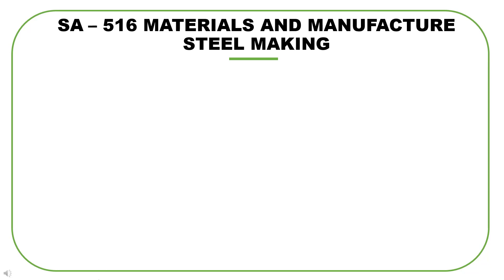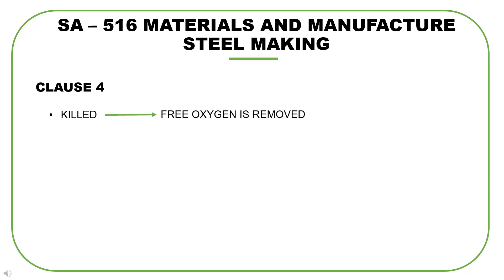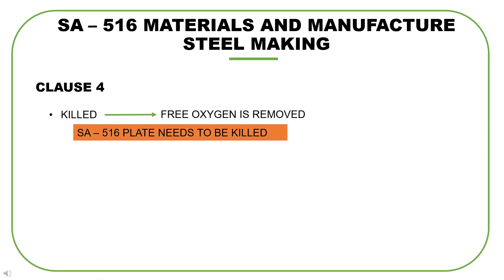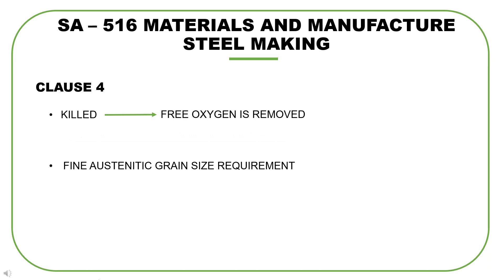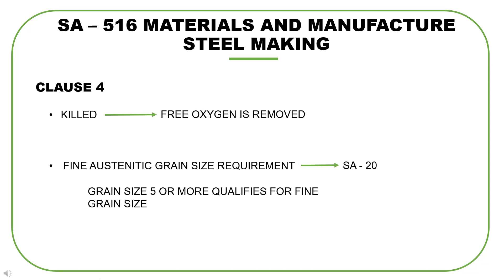Clause 4 covers the steelmaking practice. It includes a very important point: the plate manufactured under the SA 516 specification needs to be killed. In steelmaking, killing refers to the procedure where free oxygen is removed from the material. Please note and memorize this point — SA 516 plate needs to be killed. The second very important point is that the plate should conform to the fine austenitic grain size requirement of specification SA 20. Fine grain size means the grain size shall be 5 or more as determined by SA 20.